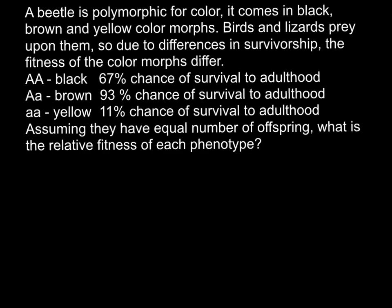Birds and lizards prey upon them. So due to differences in survivorship, the fitness of the color morphs differ. Homozygous dominant is black and has a 67% chance of survival to adulthood. Heterozygous is brown and has a 93% chance of survival to adulthood. And homozygous recessive is yellow and has an 11% chance of survival to adulthood. Assuming that they have equal number of offspring, what is the relative fitness of each phenotype?